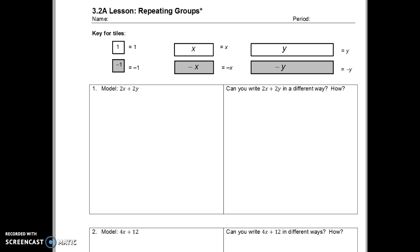The first problem says model 2x plus 2y. So I know that I need 2 x's and 2 y's, so I'm going to write an x, an x, a y, and a y. Remember, we always have to label our x and y tiles. We don't have to label our 1's tiles or our unit tile. Alright, so this is obviously a representation of 2 x's and 2 y's.